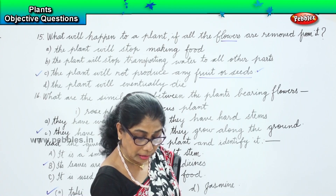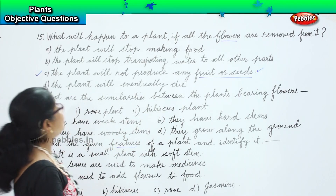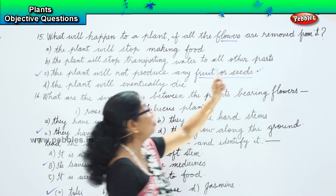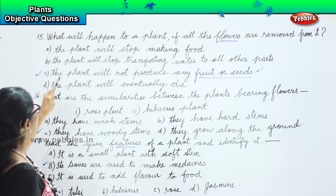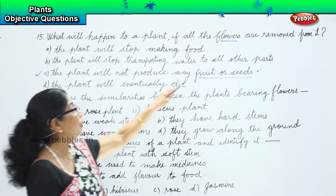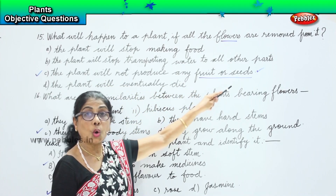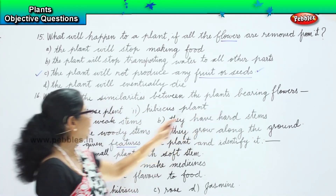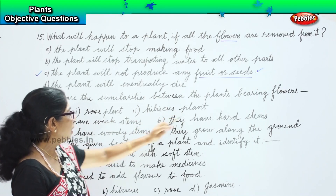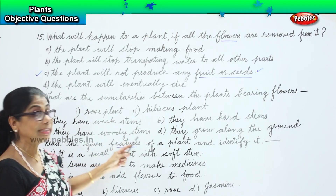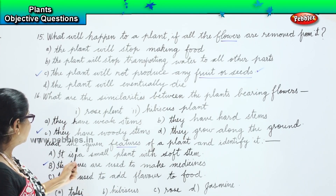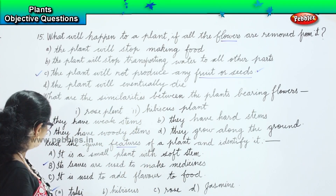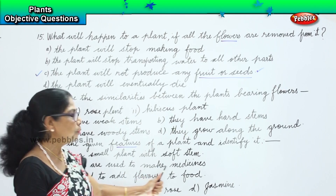Let's recap the questions. Question 15: what will happen to a plant if all the flowers are removed? The plant will not produce any fruit or seeds. Question 16: what are the similarities between the plants bearing flowers, like rose and hibiscus? They have woody stems. Question 17: read the given features of a plant and identify it — Tulsi plant; its leaves are used to make medicine.